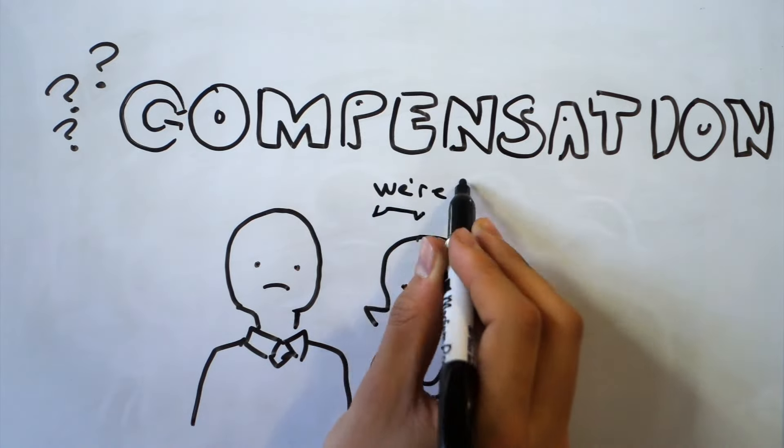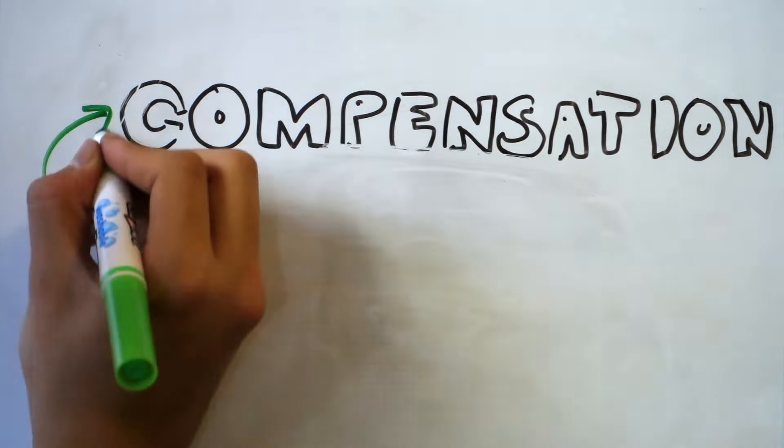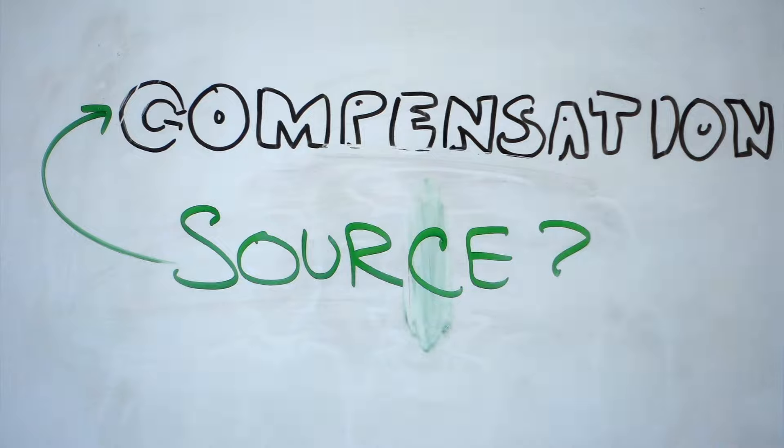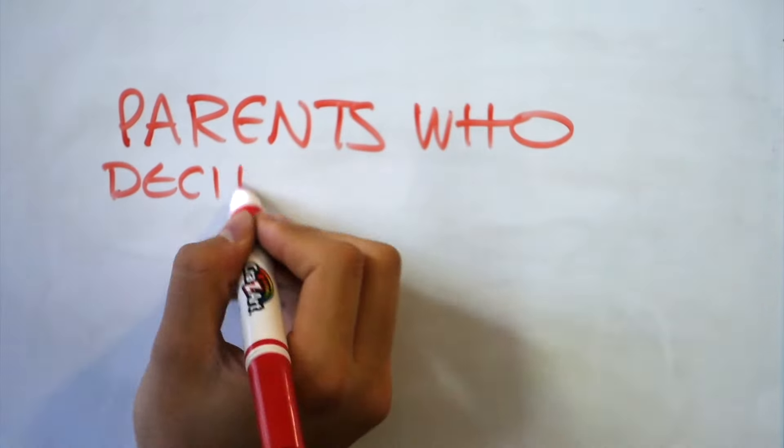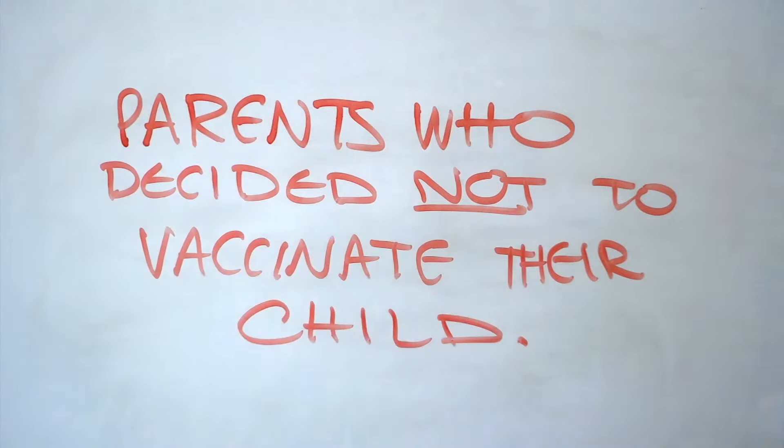But where would this compensation come from? Well, if your child, who's too young to be vaccinated, contracts measles from a deliberately unvaccinated child, wouldn't you want the parents who decided not to vaccinate their child to be held responsible?